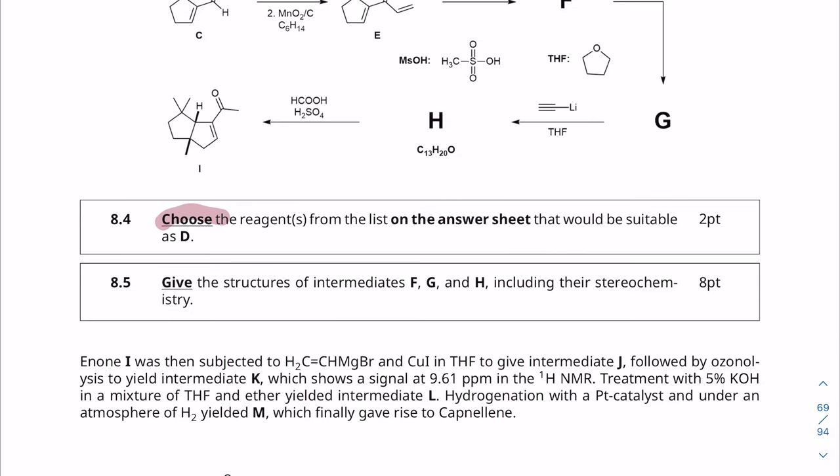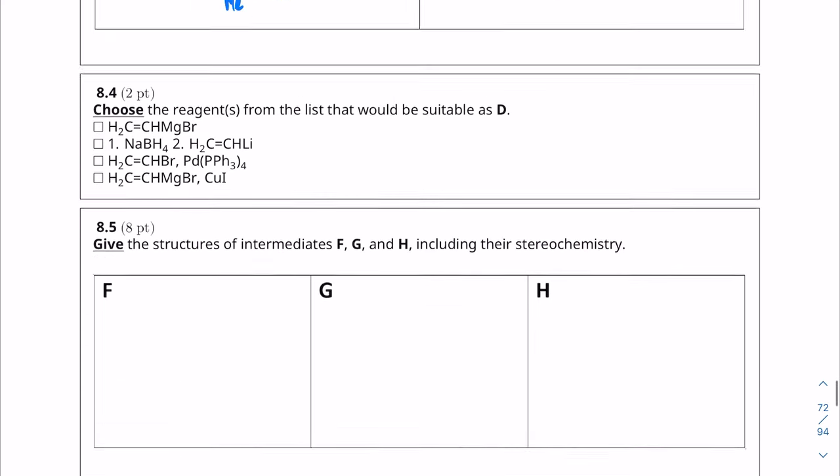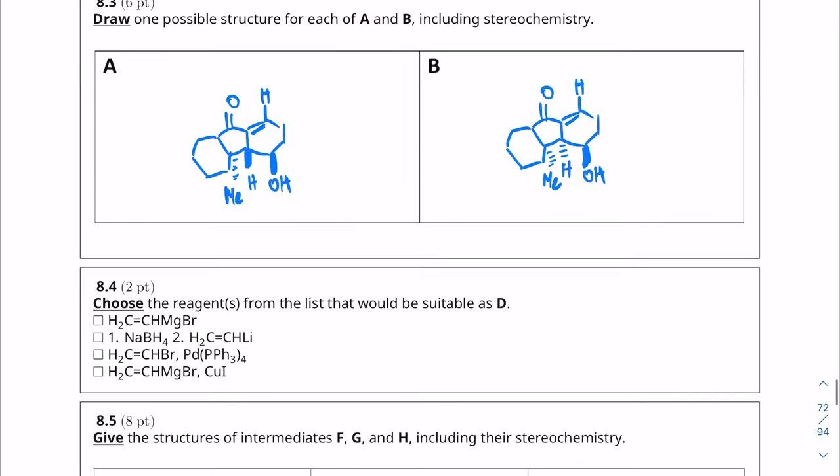8.4. Choose the reagents from the list on the answer sheet that would be suitable as D. So as I said, we're looking for a nucleophile that could attack a carbonyl group, which coincidentally is going to be vinyl magnesium bromide. Number two is not going to work because sodium borohydride would reduce the ketone and then vinyl lithium can't attack it. The cross coupling something isn't really going to work either. And if we used vinyl magnesium bromide with copper iodide, we would have conjugate addition. So only vinyl magnesium bromide is going to be the solution here.